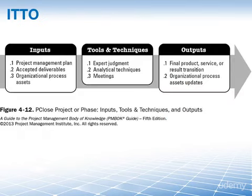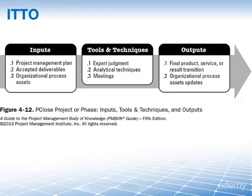We're moving on to the review of the inputs, tools, techniques, and outputs, taking another look at the overview from the PMBOK guide. There are not all that many — three inputs, three tools and techniques, and two outputs. But they're the big ones. The second input is accepted deliverables — basically all the deliverables from our project — and then the output there is the final product, service, or result transition, which is the big one — handing it over to the customer.